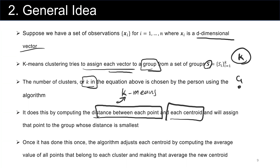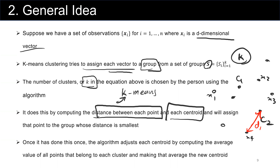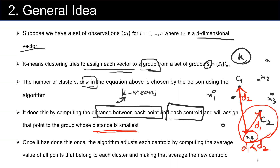For example, with centroids C sub 1 and C sub 2 and data points x sub 1, x sub 2, x sub 3, x sub 4: we find the distance of x sub 4 to C sub 2, call it D1, and the distance of x sub 4 to C sub 1, call it D2. Because D1 is less than D2, we assign x sub 4 to the cluster where centroid 2 is located — that's why we talk about the shortest distance. Once this is done, the algorithm adjusts each centroid by computing the average value for all points belonging to that cluster and defines the new centroid. As you can see, this is an iterative process.